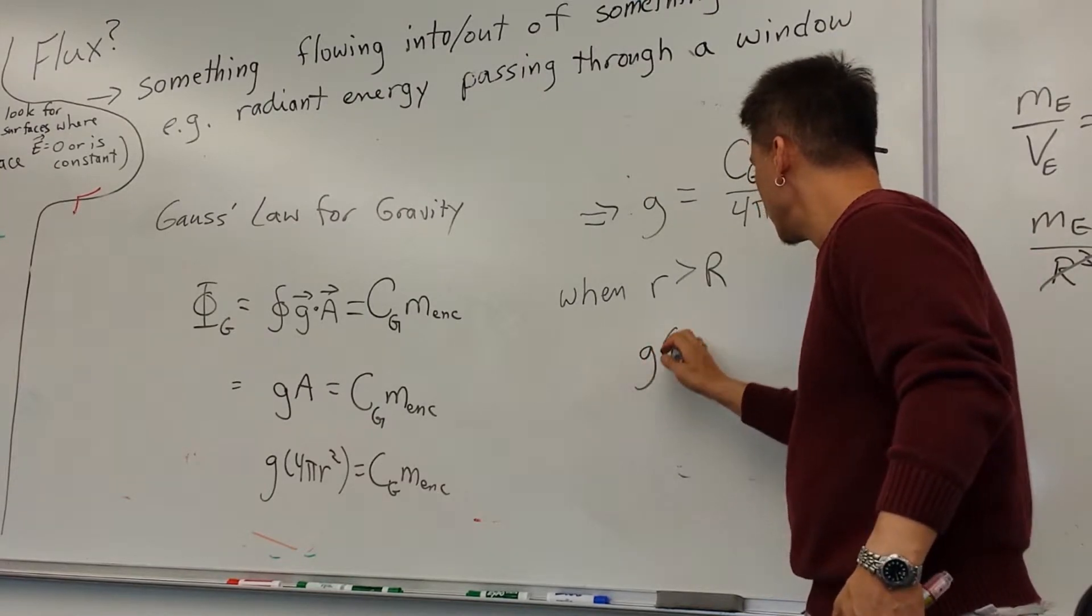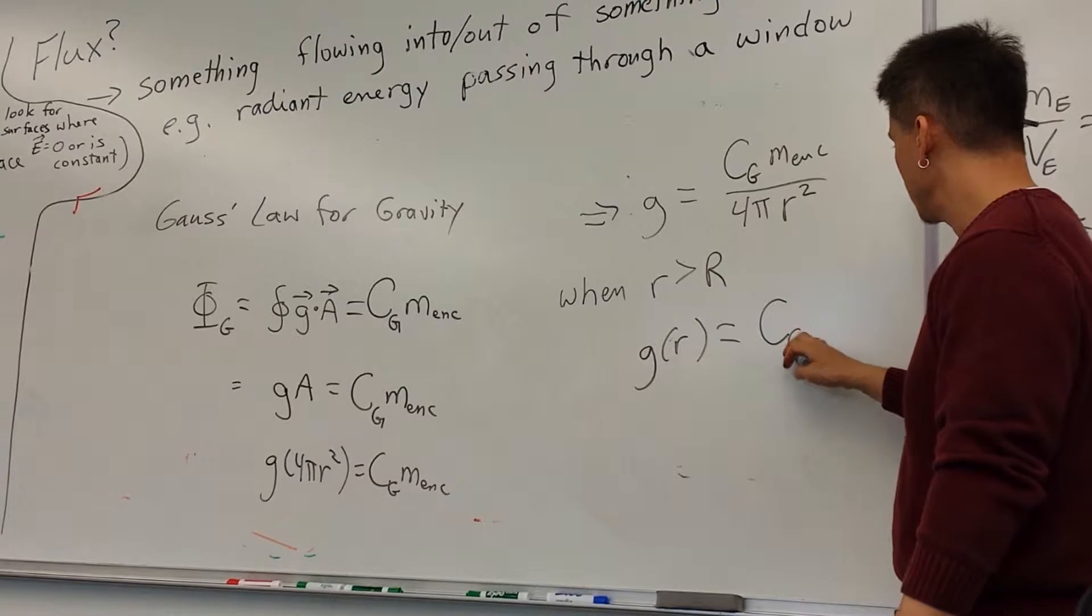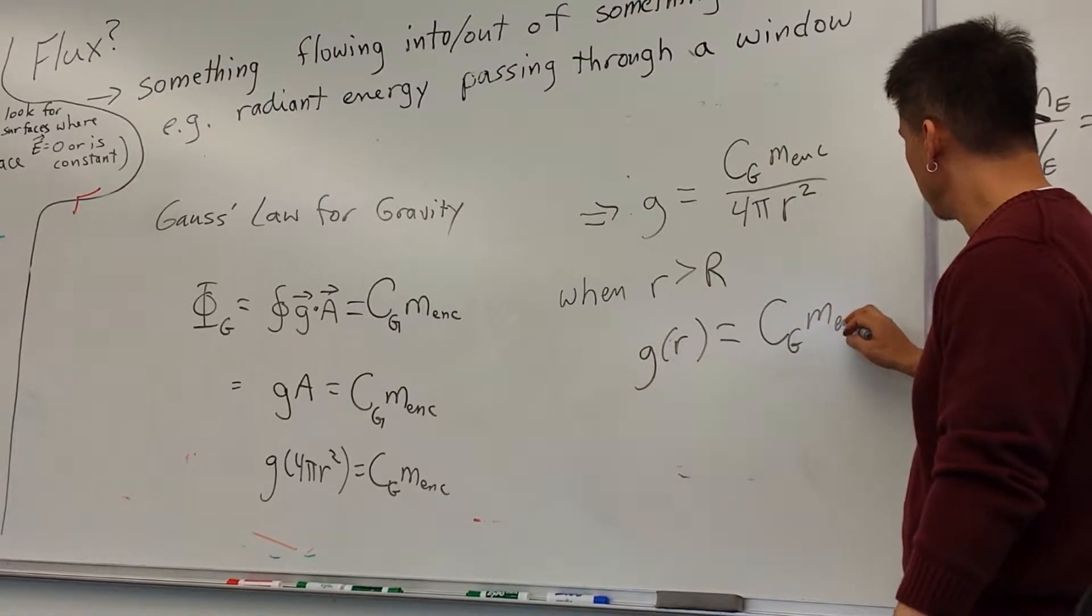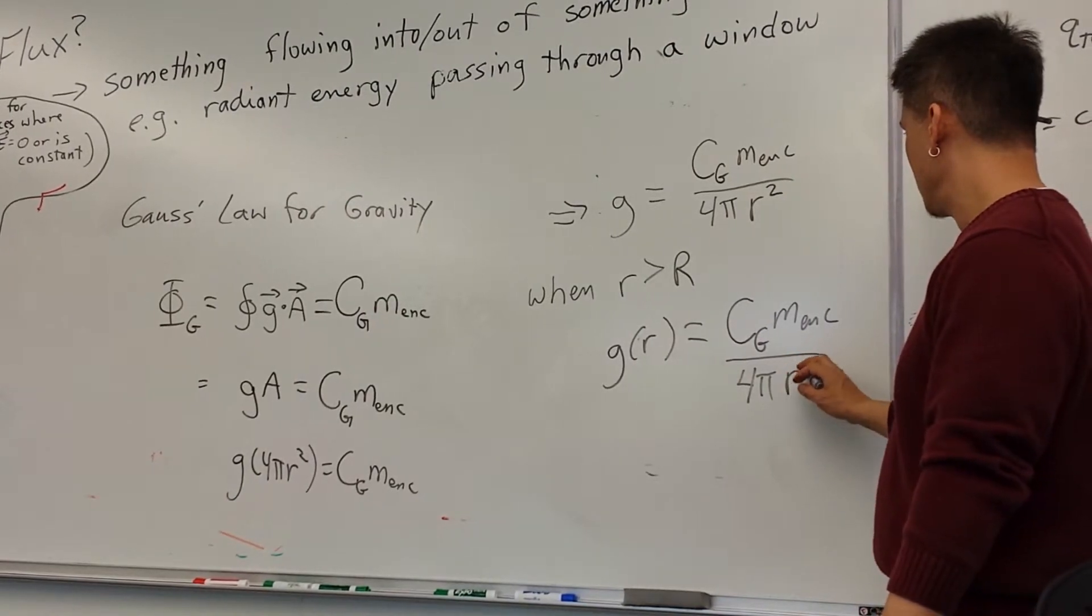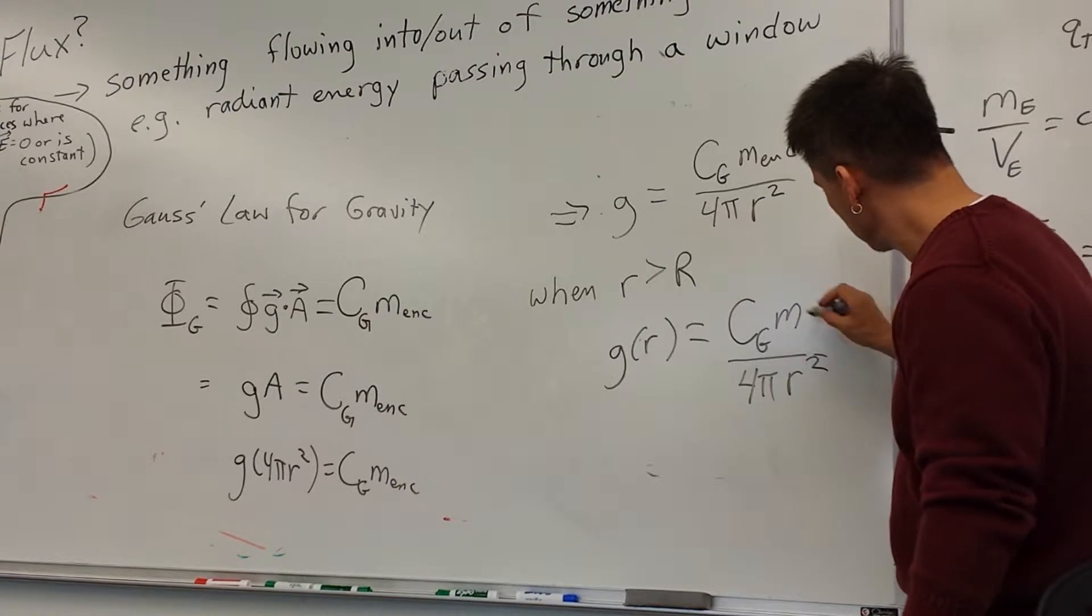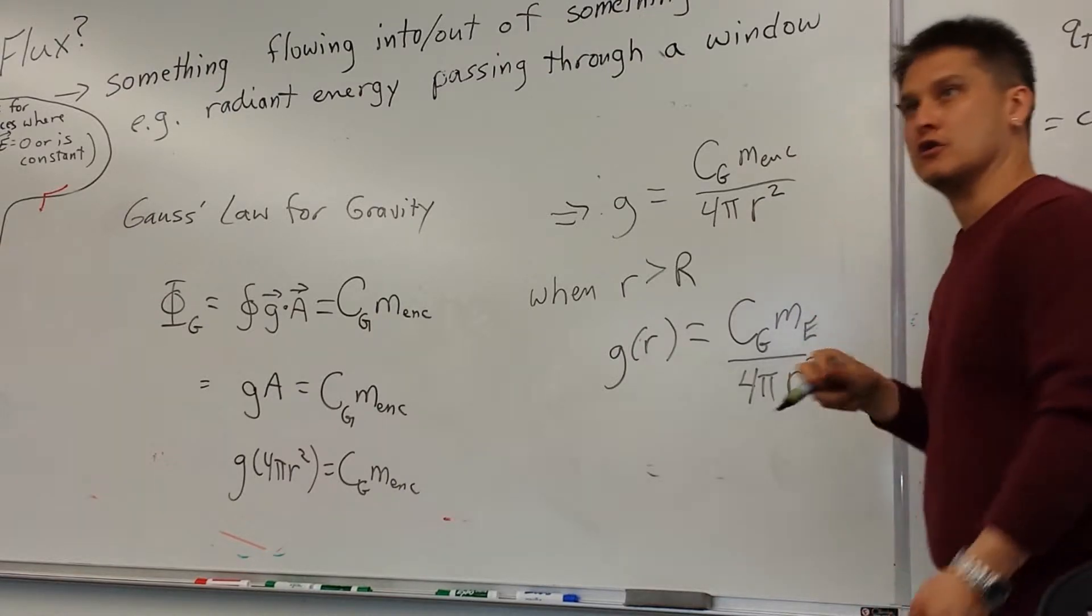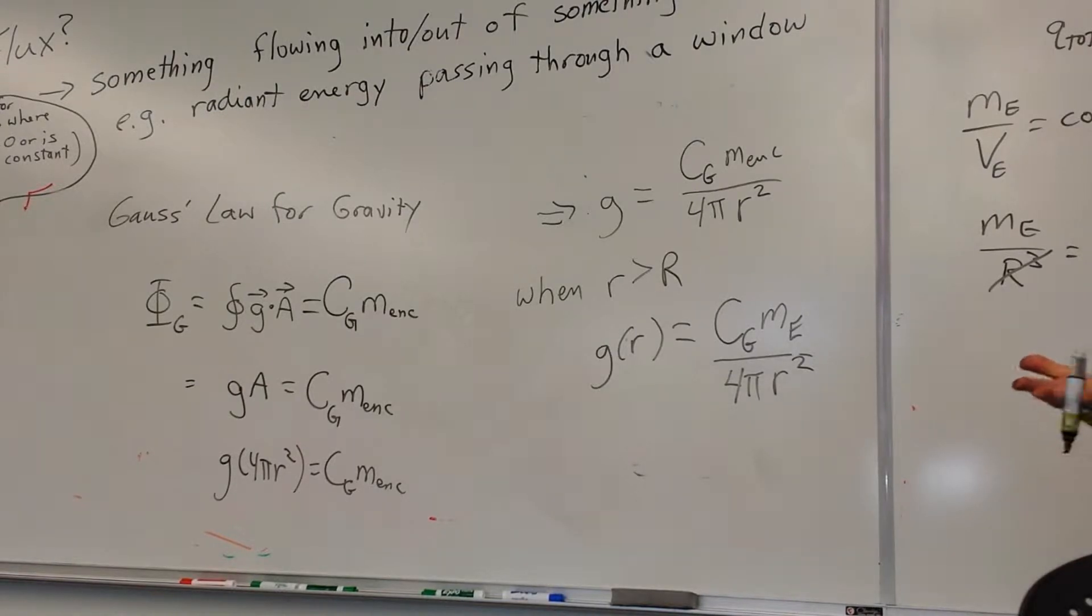Then the gravitational field should be C_G M_enclosed over 4π, or M_E excuse me, R². Because the mass enclosed will be the total mass of the Earth when you're outside.